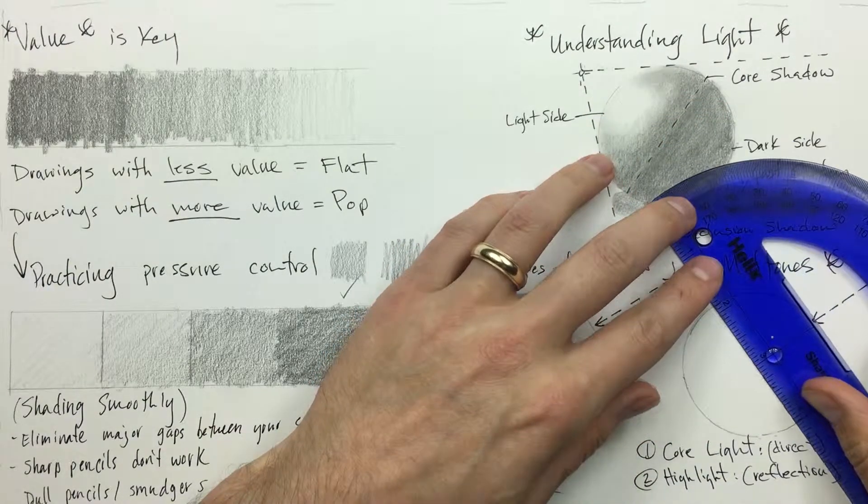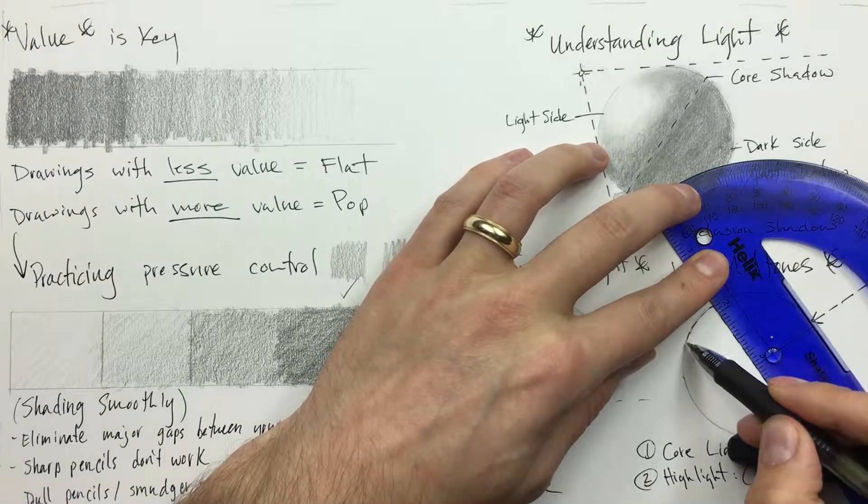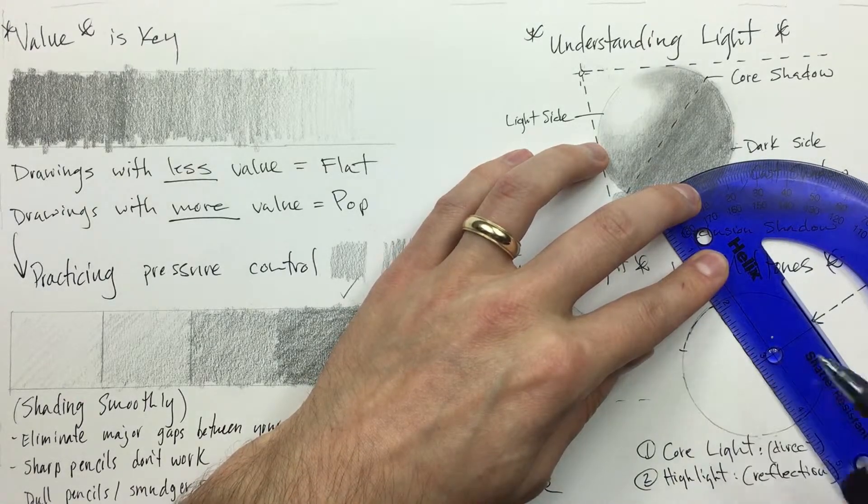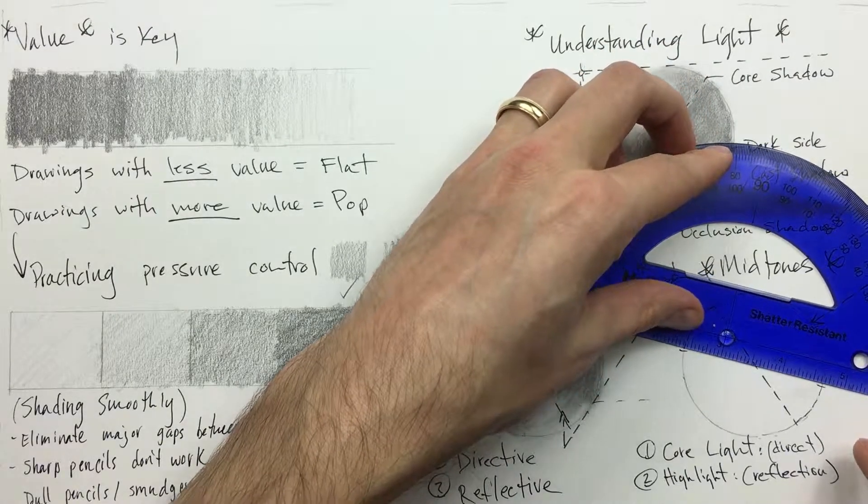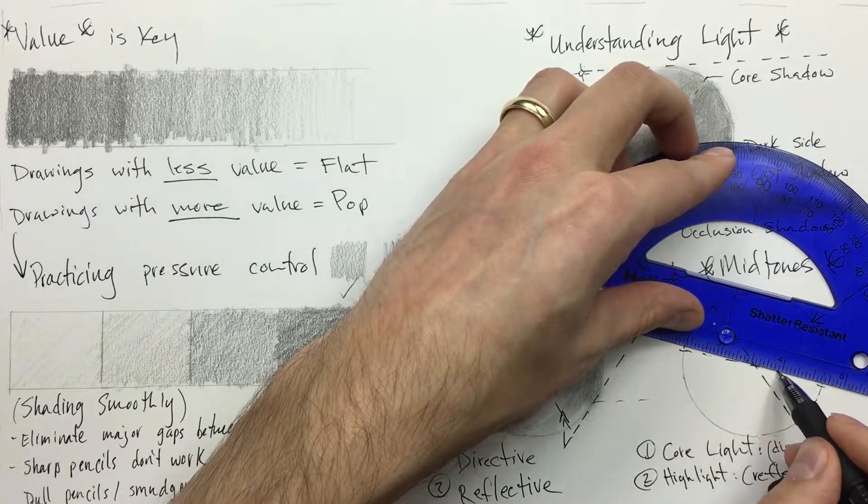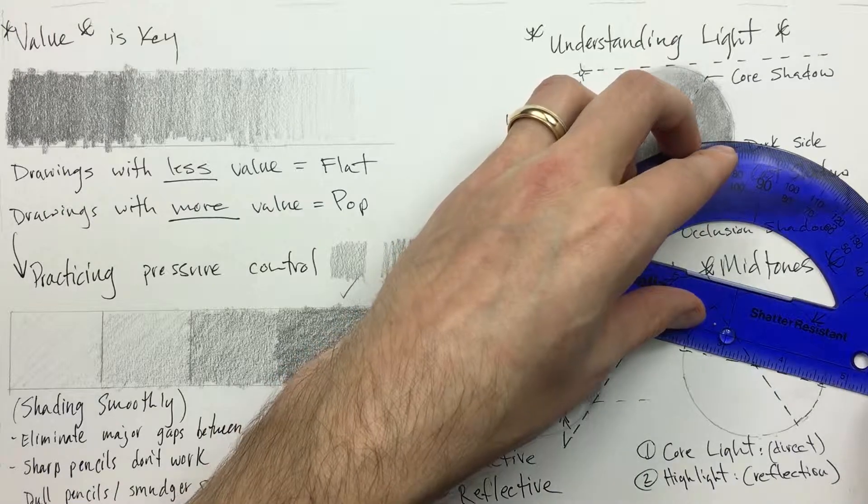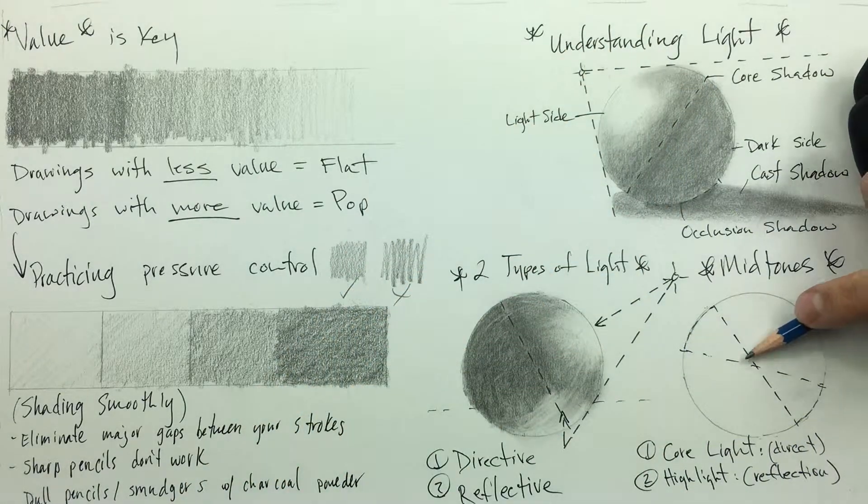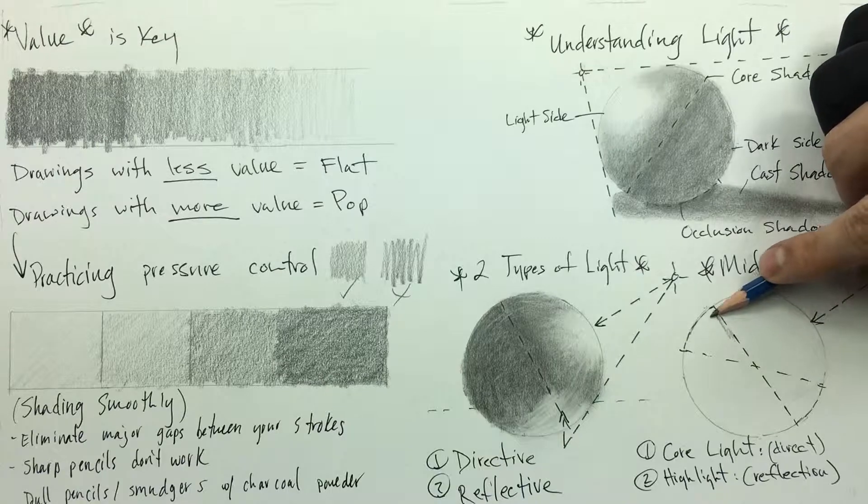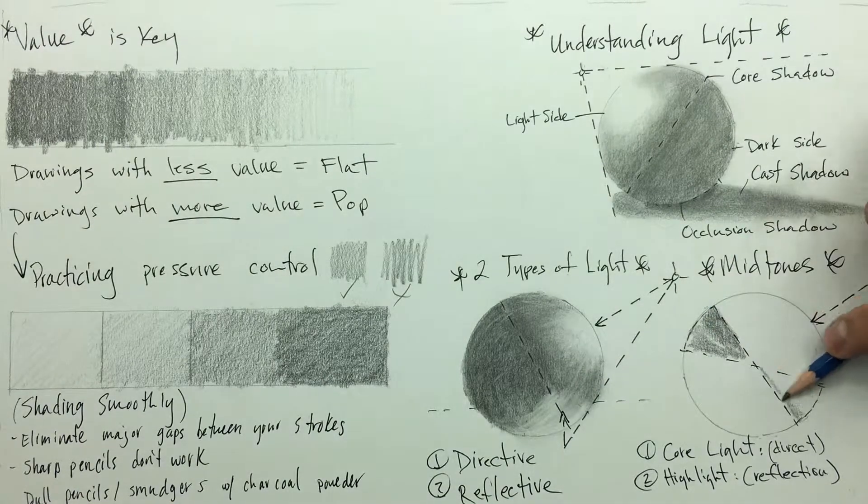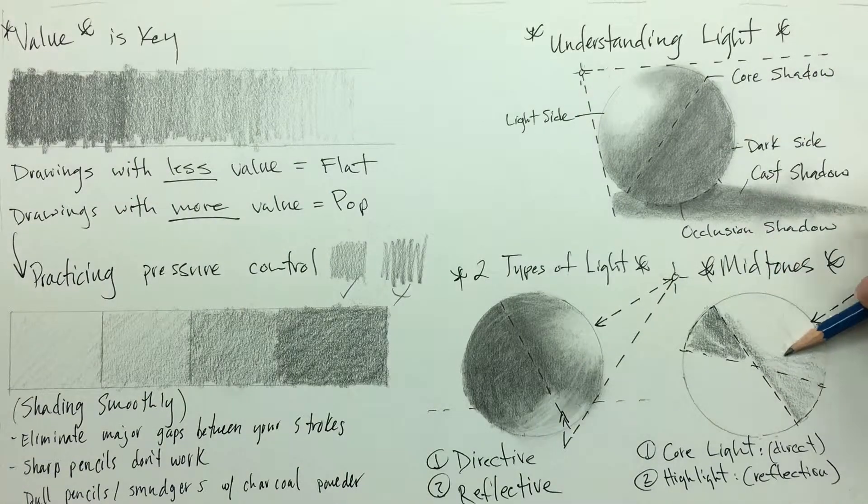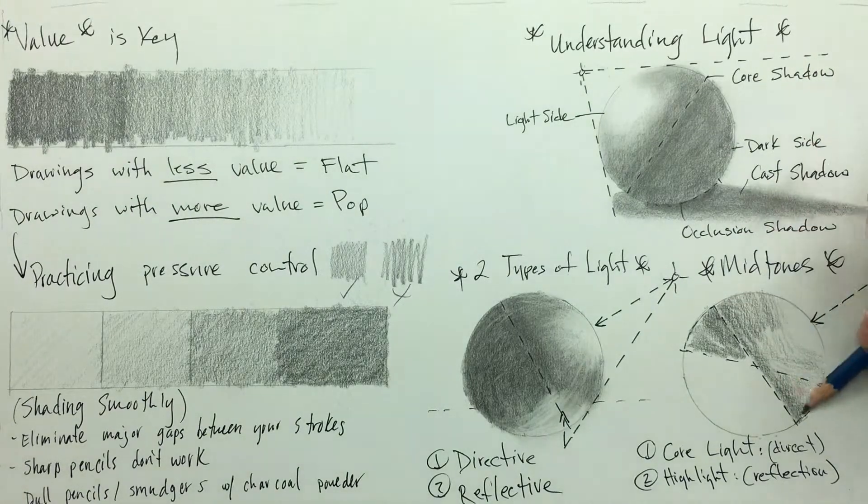Because that is where the value that you're going to be working with is going to be the darkest. You don't have to worry about adding too much because that core shadow is going to be the darkest. Now as you move towards the core light you are going to gradually lay down less and less graphite and your values are going to become lighter and lighter. This is one of the reasons why practicing making the smooth transition from dark to light values is really going to shine through for you when it comes to the actual application.